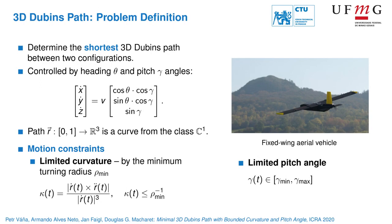The problem of finding the shortest path in 3D is motivated by fixed-wing aerial vehicles which have a limited turning radius and pitch angle. Therefore, we need to find a continuous curve that meets both constraints.